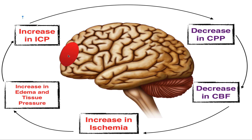Looking at the bigger picture: when we increase intracranial pressure, we see a decrease in cerebral perfusion pressure — that pressure that keeps blood moving throughout the brain. As we increase intracranial pressure, we also decrease cerebral blood flow, which is the amount of blood being delivered to the brain. So as ICP increases, we're decreasing the amount of blood to the brain.